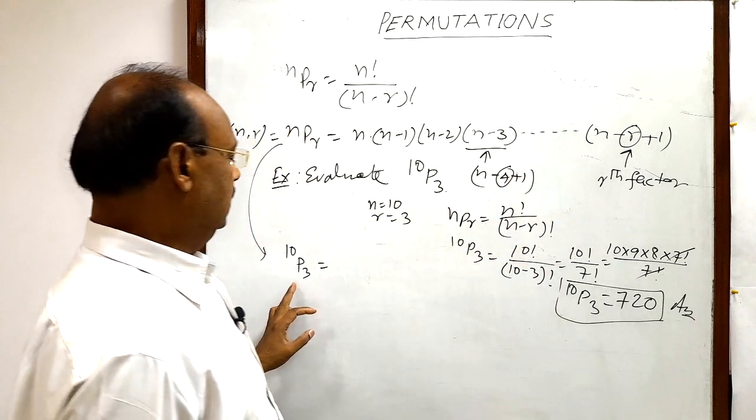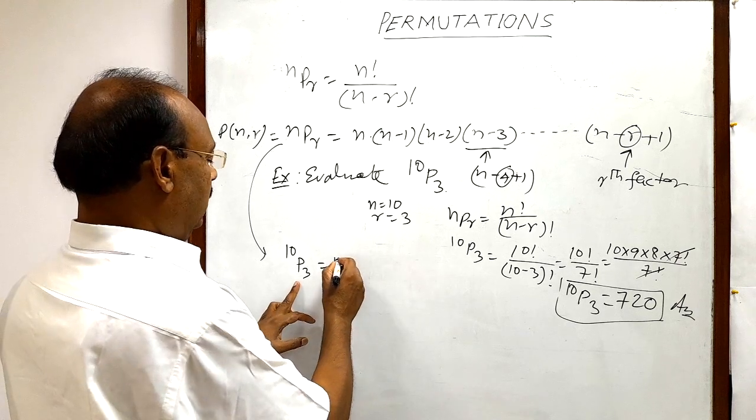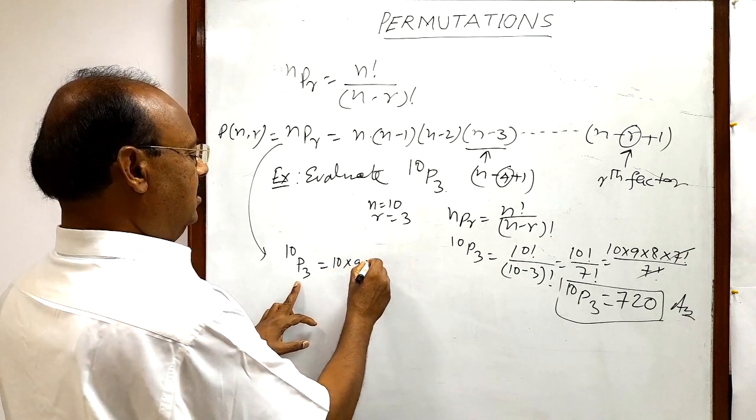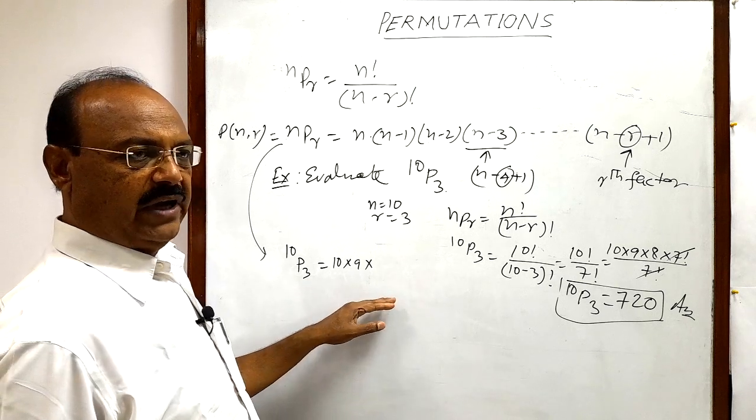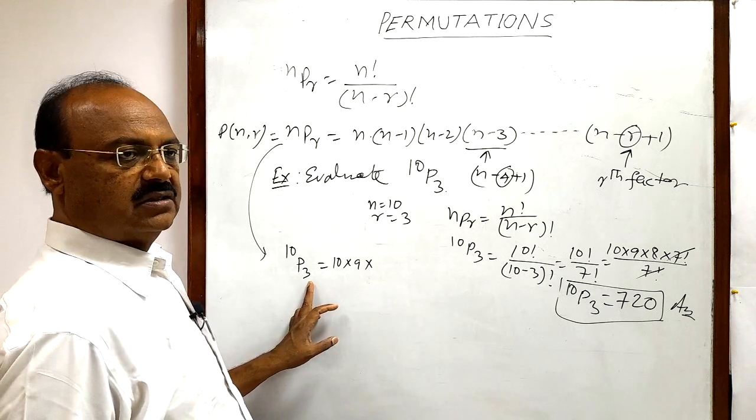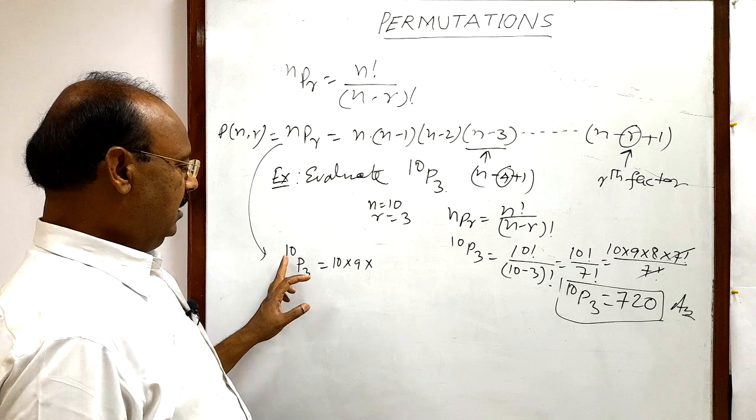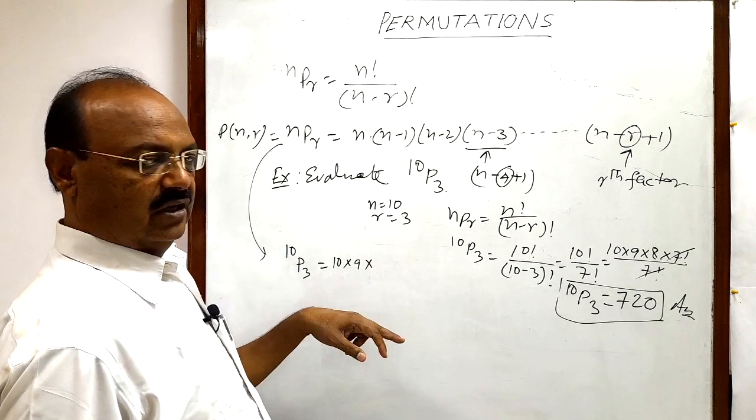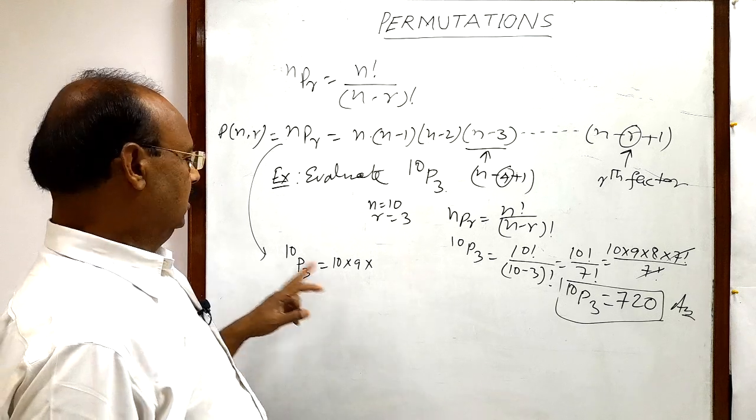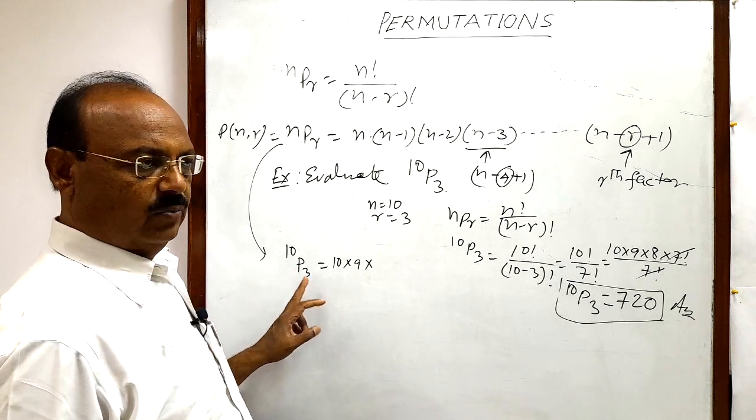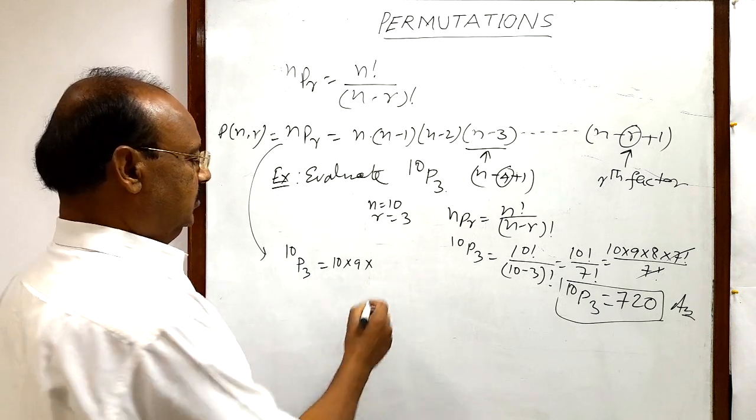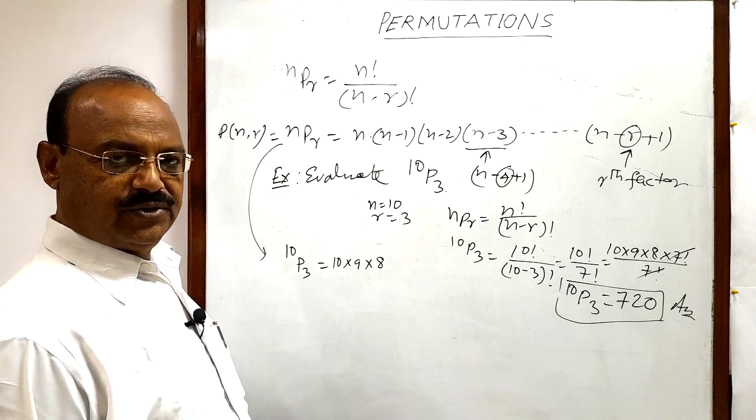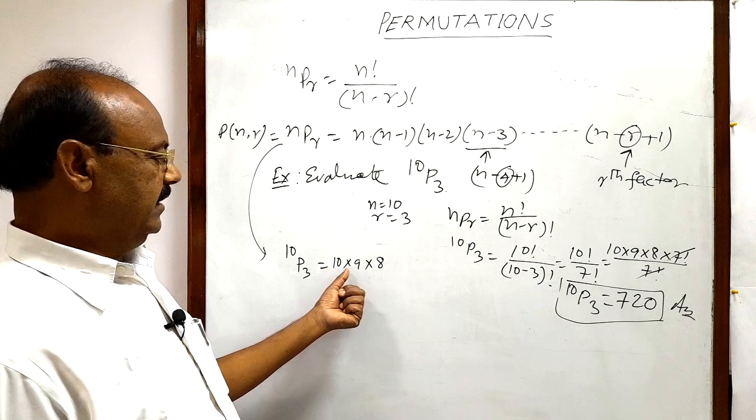So if you follow this pattern here, then this can be written as 10 into 9 into how many factors we have to write here? Three factors. 10 minus 3 plus 1, that will be the last factor. 10 minus 3 is 7 plus 1 is 8. So 10 into 9 into 8. Understood? We are writing only three factors here.